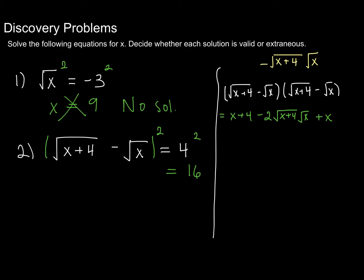Alright. So notice I can simplify this a little bit, because I have x plus x, which is 2x. So I can rewrite this as 2x plus 4 minus 2 times. Now, notice that both of these things are being square rooted. In other words, both of them are being raised to the 1 half power. And so I can just write them as being multiplied together and then raised to the 1 half power, or square rooted. So I can rewrite it as x plus 4 times x square root.